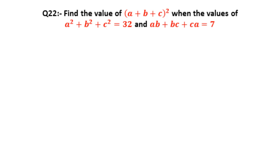is equal to 32, and AB plus BC plus CA is equal to 7.